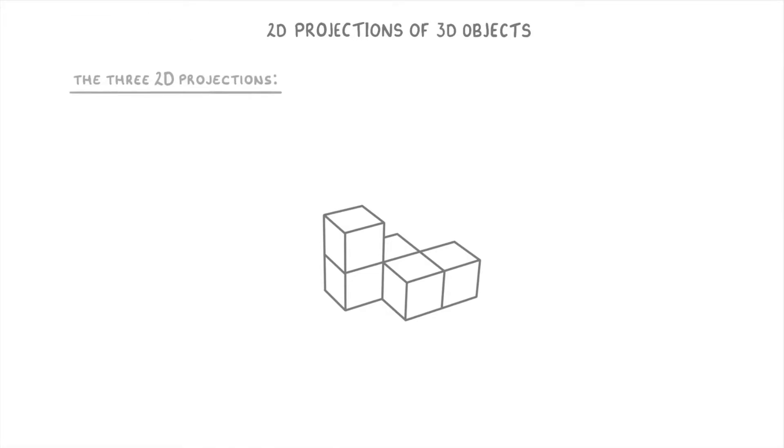The three 2D projections that you need to understand are the front elevation, the side elevation, and the plan.